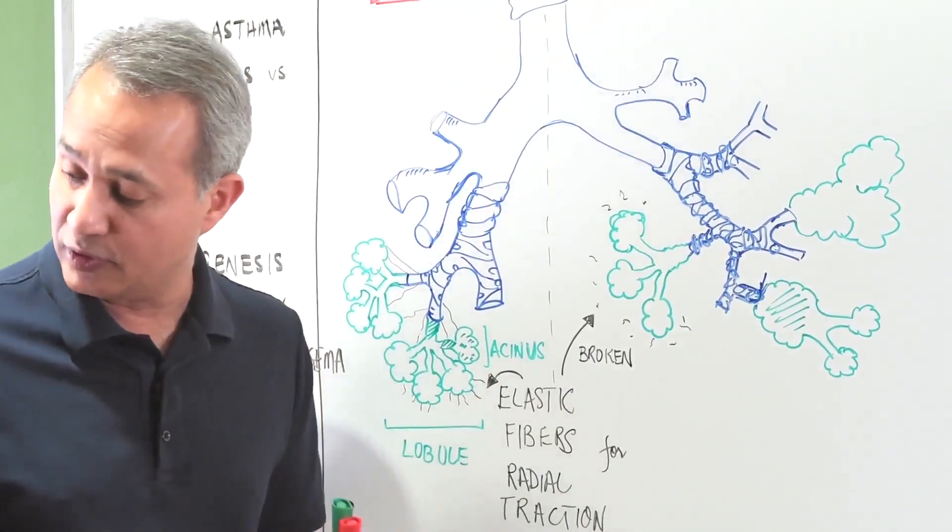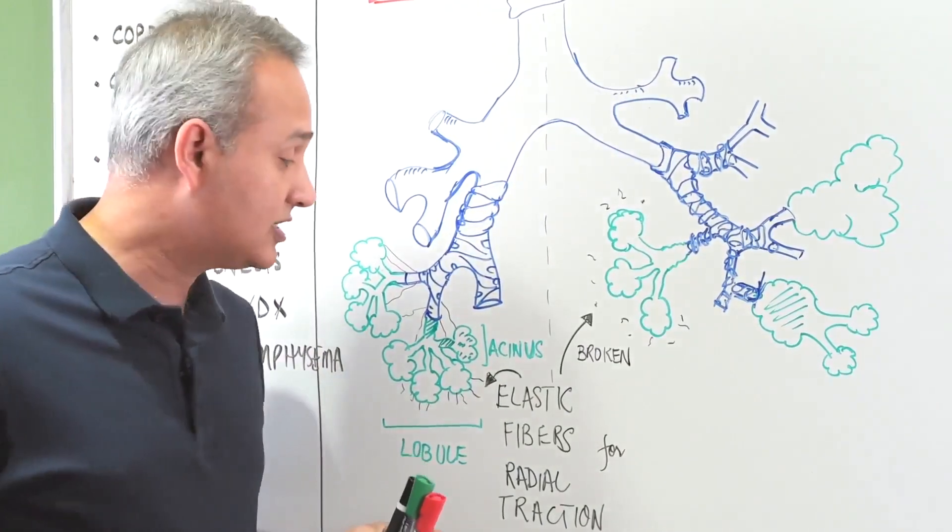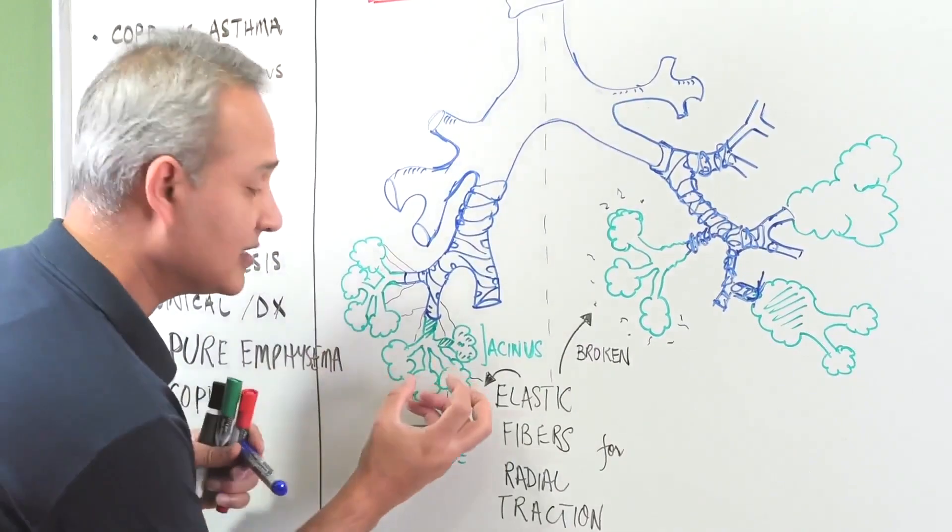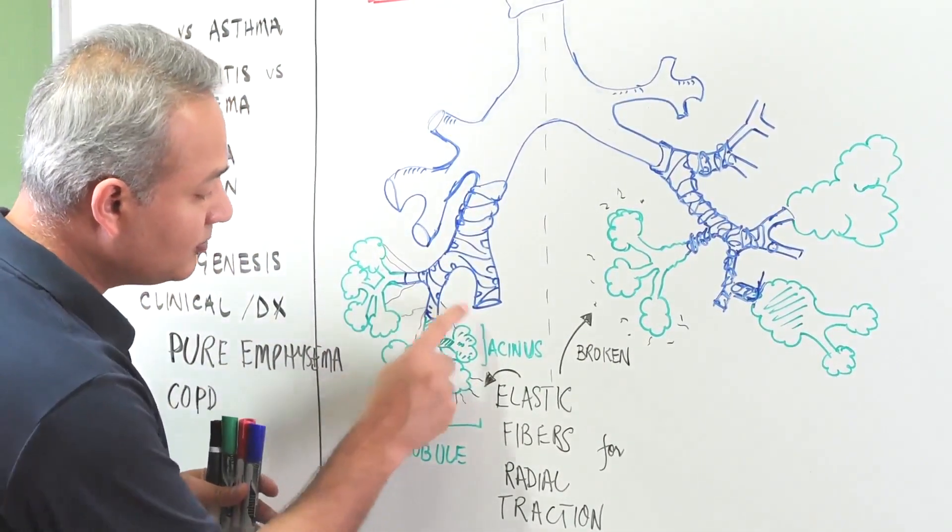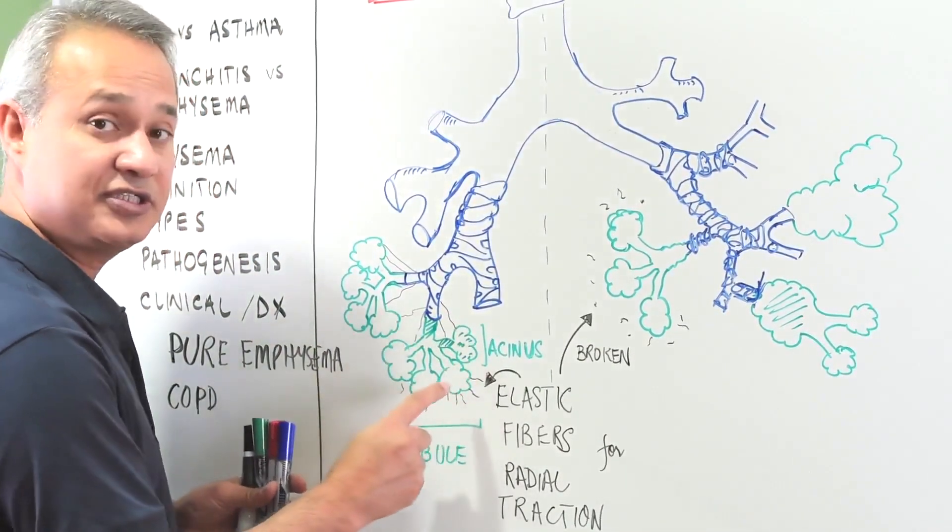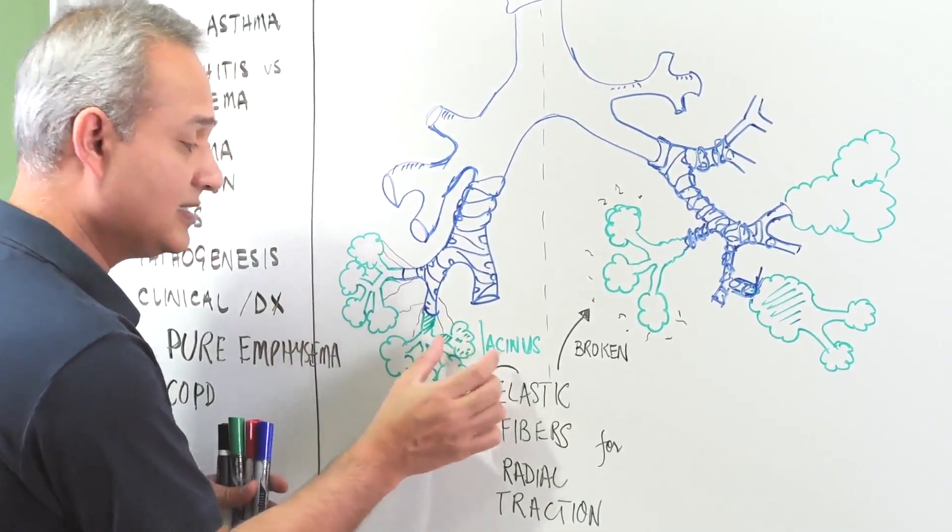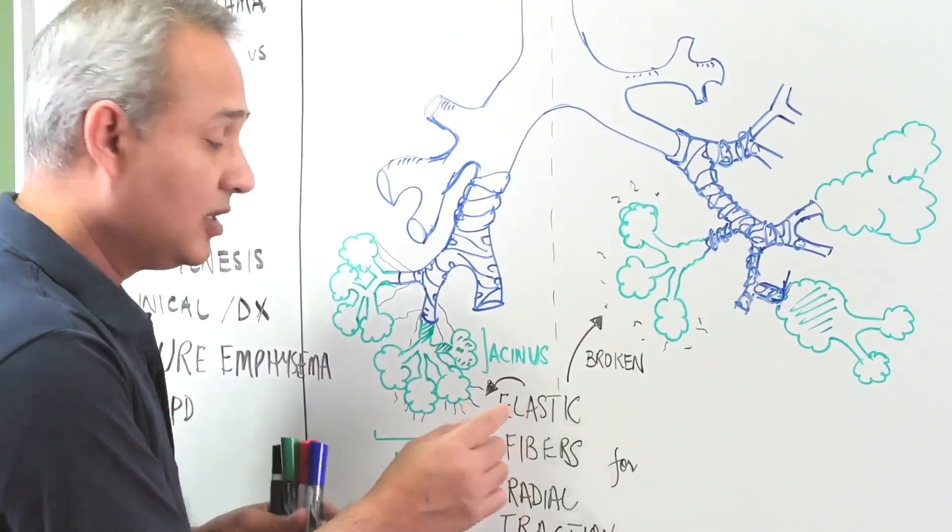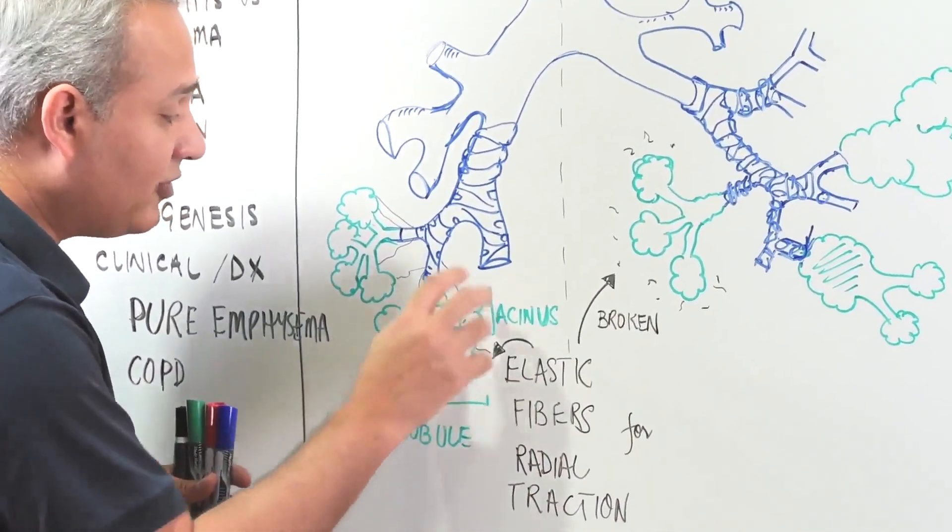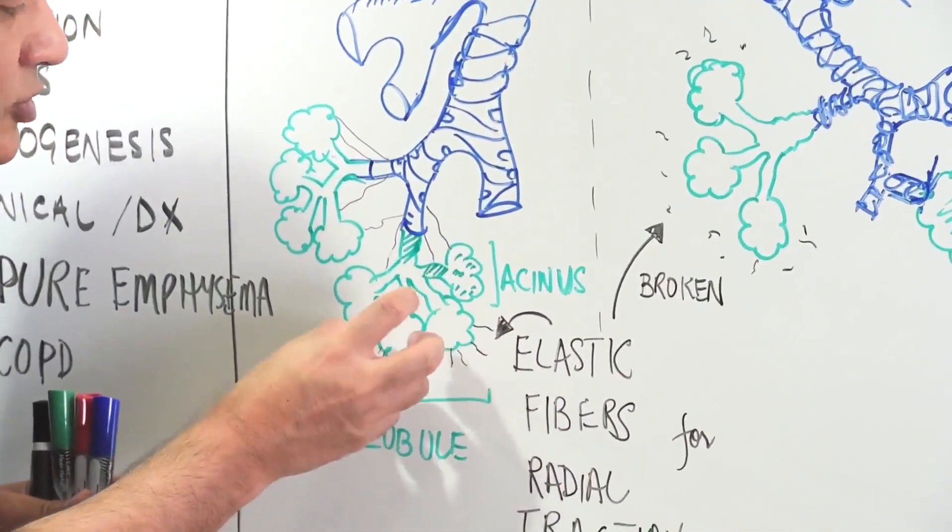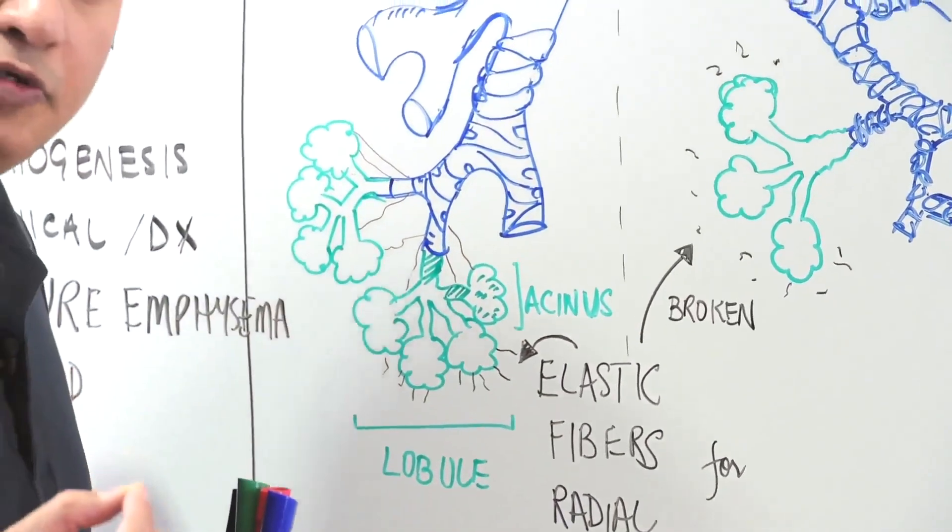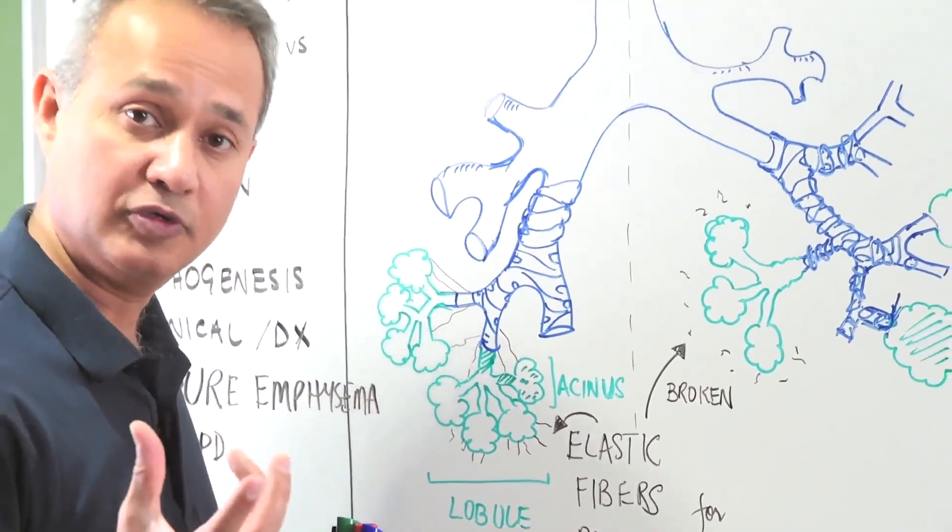These alveoli are balloon-like structures present at the end like a cluster of grapes. This portion that does the gaseous exchange - one alveolar duct, alveolar sac, and the alveoli - is called acinus. However, three to five acini connected together is called a lobule, or respiratory lobule.